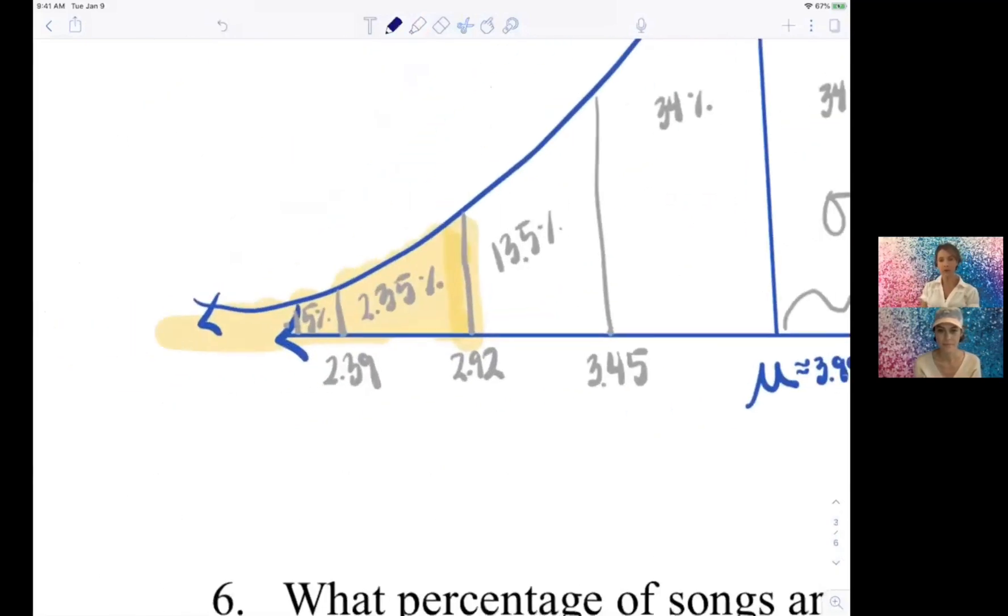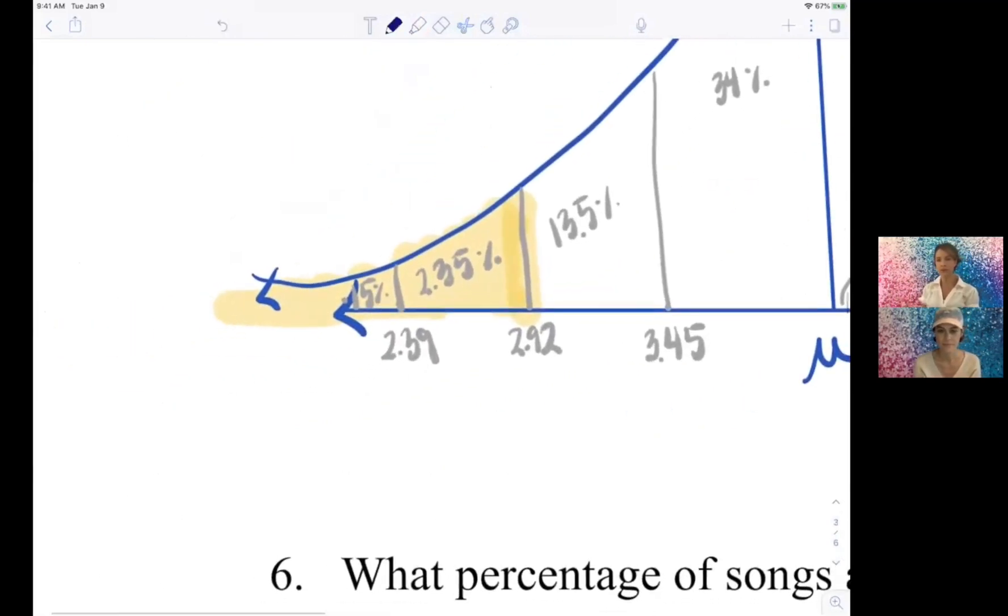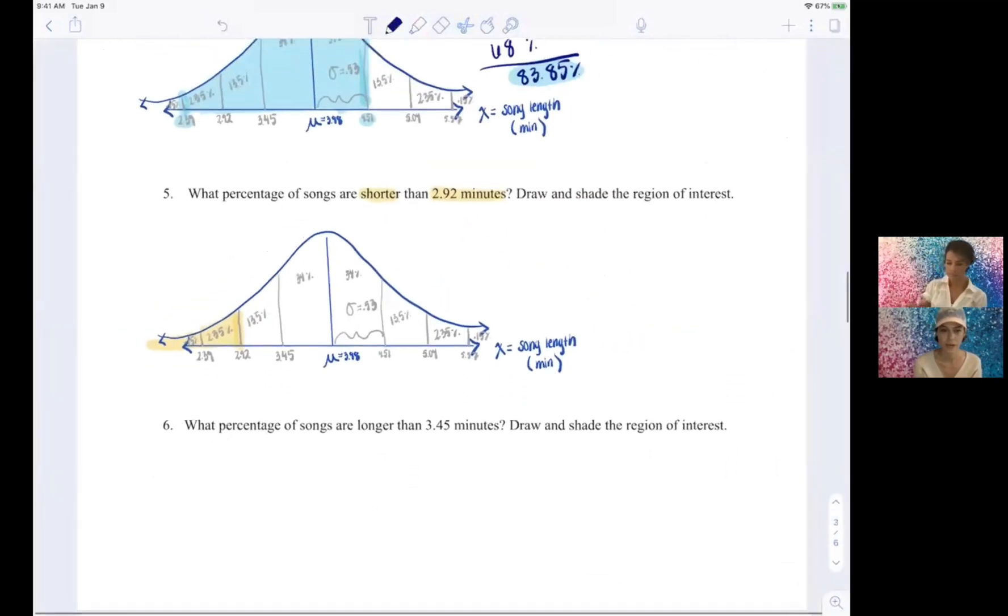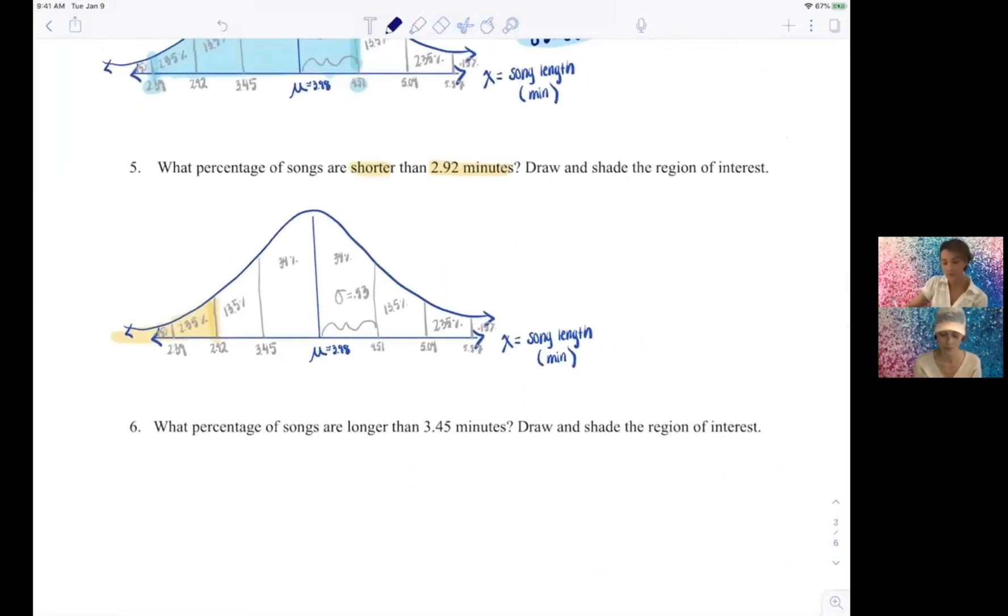Okay, so that means we really just want to know what percentage of songs are in those two little regions there in like, work, right. So we just take 2.35 percent, we add it to the 0.15 percent, and we just get 2.5 percent. Cool, totally doable. Yep, all right.